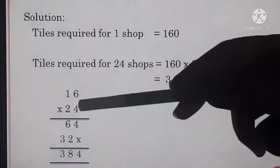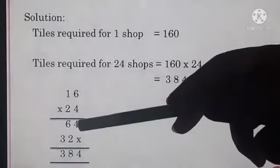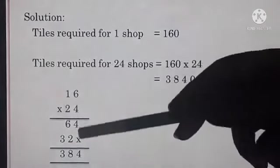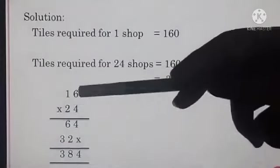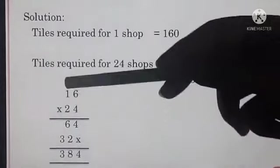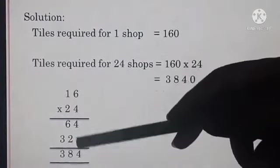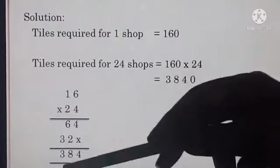So 16 multiplied by 24, we have done. 4 times 6 are 24, write 4, 2 carry. 4 times 1 is 4 plus 2, 6. Second step is there, so cross. 2 times 6 are 12, write 2, 1 carry. 2 times 1 is 2 plus 1, 3. So 4, 6 plus 2, 8 and 3.